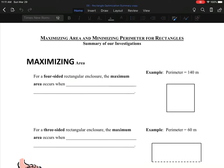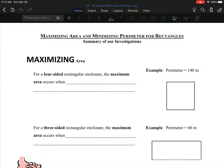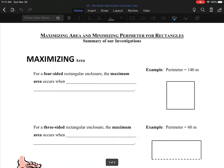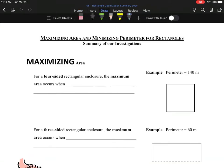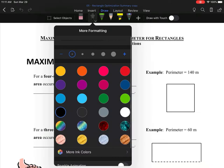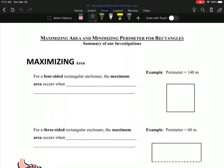This one's called Rectangle Optimization Summary, so a summary of what you've seen: maximizing area and minimizing perimeter for rectangles. I just want to mention that at the start, when you maximize area you automatically minimize the perimeter. When you minimize the perimeter you automatically maximize the area. So those two things happen at the same time in rectangles.